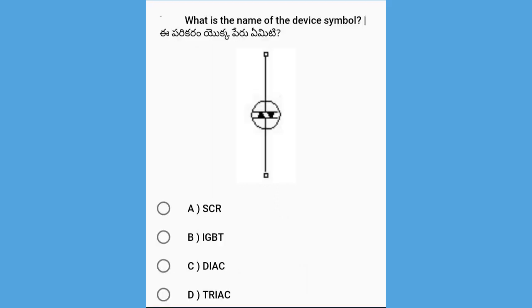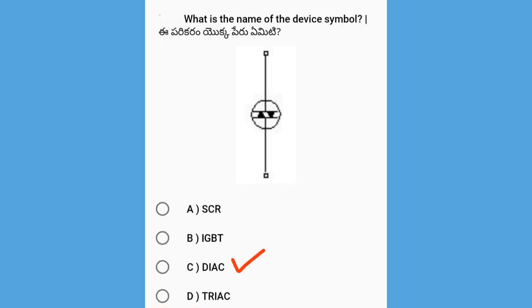Next, what is the name of the device symbol shown? The options are SCR, IGBT, DIAC, and TRIAC. The answer is DIAC.